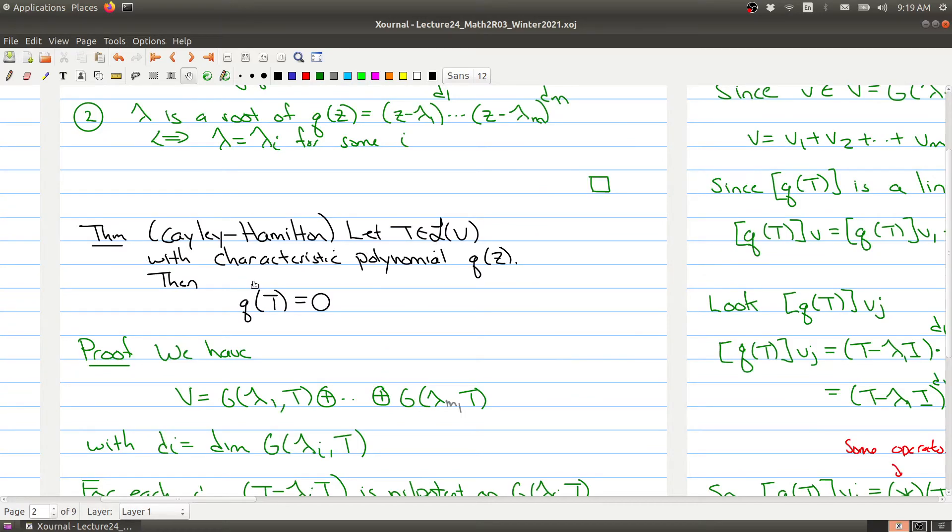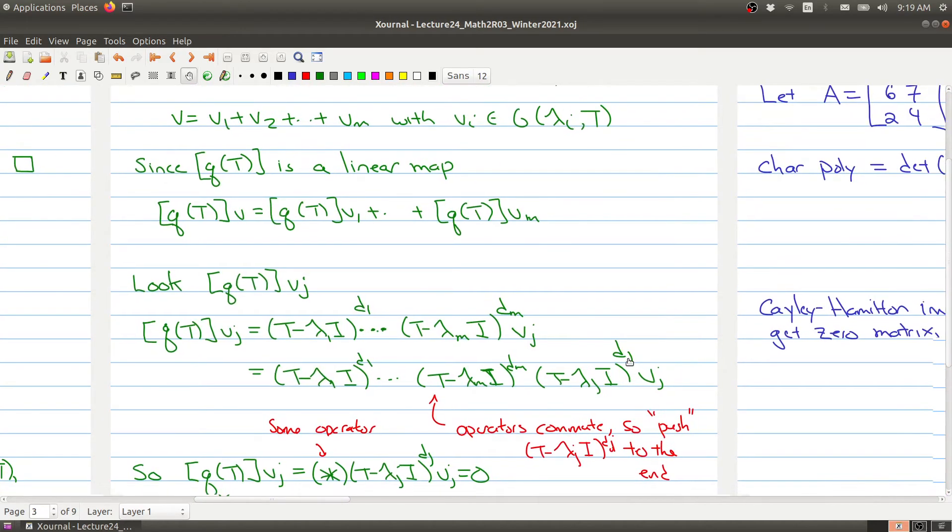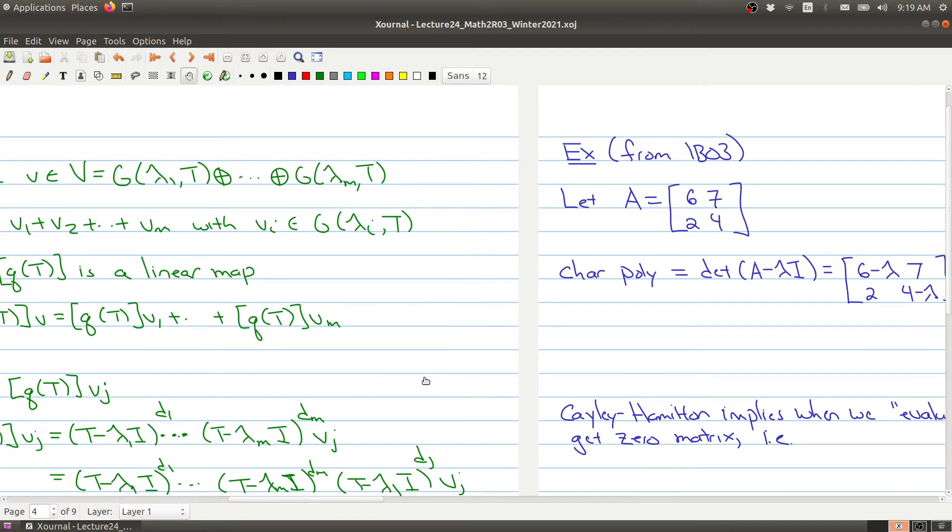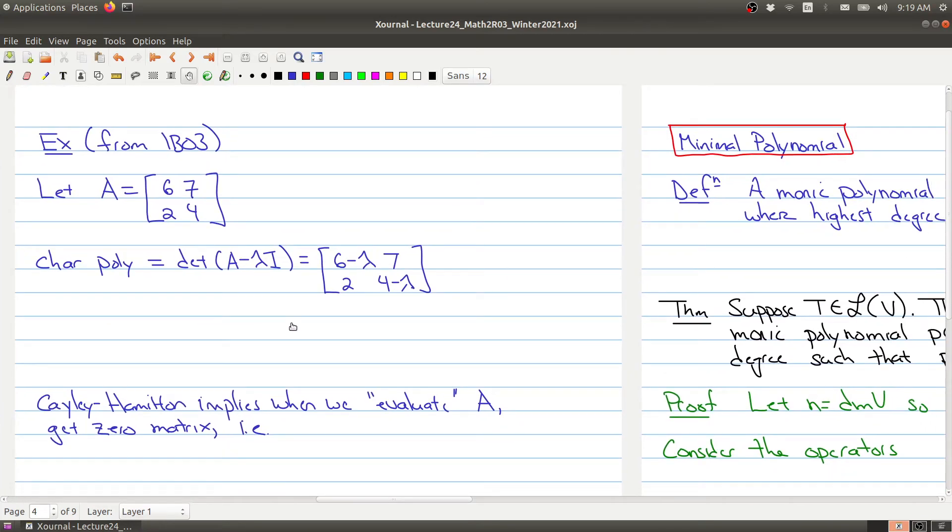For any linear operator, its characteristic polynomial becomes the zero operator. Let's express this in terms of Math 1B03. We know what a determinant is from Math 1B03, and we can figure out the characteristic polynomial. For the matrix [6,7; 2,4], the characteristic polynomial is found by taking the determinant of this matrix, which gives (6-λ)(4-λ)-14. If you do all the work, this becomes λ² - 10λ + 10.